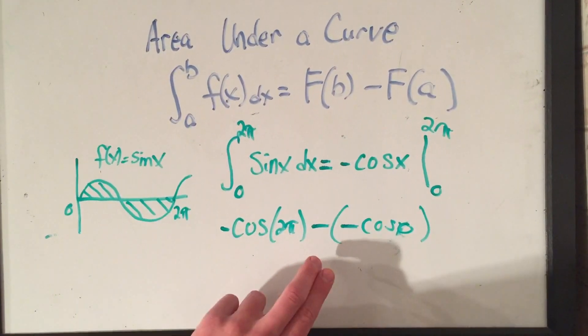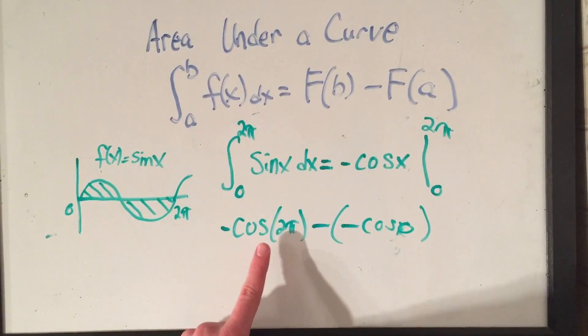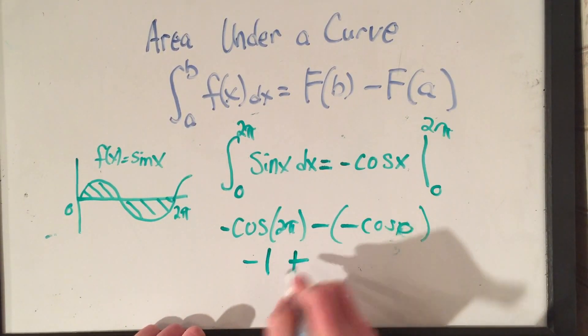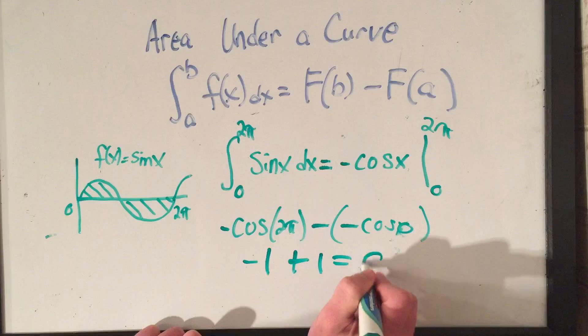Bumped my camera a little. And now I just have to evaluate these things. Okay, well, cosine of 2 pi is the same as cosine of 0. So cosine of 0 is 1. I've got minus a minus is a plus, and cosine of 0 is 1. Minus 1 plus 1 is 0.